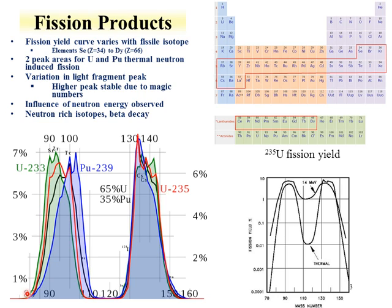Shown here are different yields for fission products as a function of fissile isotope. The green is for uranium-233, red for uranium-235, and blue for plutonium-239. One trend is that the high-Z peak is fairly constant while the low-Z peak varies. For instance, if one wants to make molybdenum-99, the fission process has a fairly high yield, which is why fissioning of uranium-235 is used to produce molybdenum-99, which then decays into technetium-99m—discussed in more detail in this lecture.